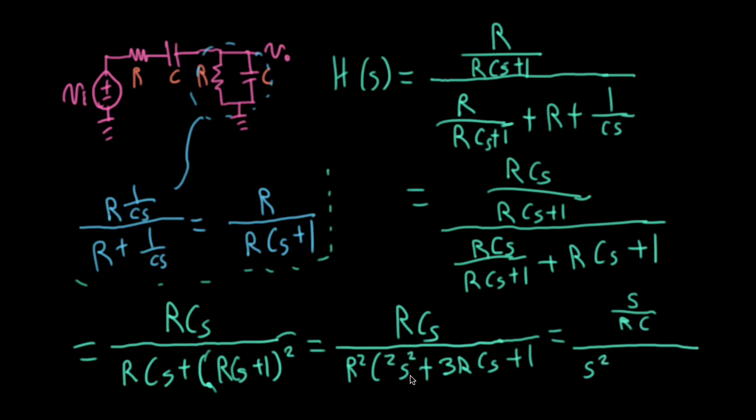So I'll have S over RC in the numerator, and then I'll have S squared. I forgot a squared here. If I was a more diligent professor, I would go back and do all of this perfectly from the beginning, but I'm not so diligent. Anyway, I'll have 3 over RCs plus 1 over, let me write this as RC squared.